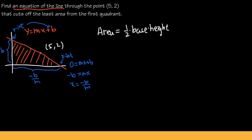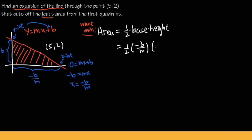We want the minimum area. The area is one half times base times height, which gives us A = (1/2) × (-b/m) × b = -b²/(2m). However, this area function has two variables, b and m, which is not ideal. We need to reduce it to a single variable.